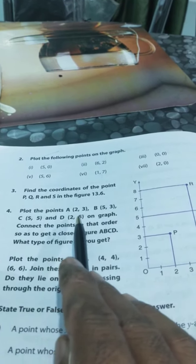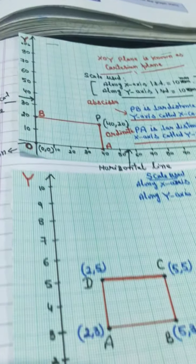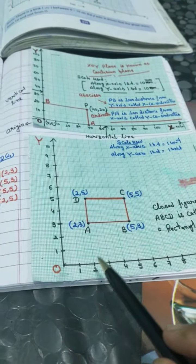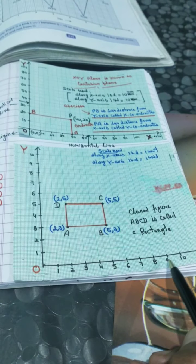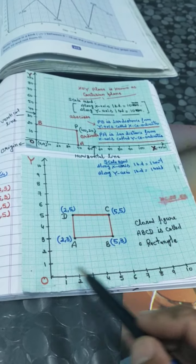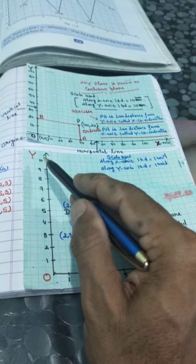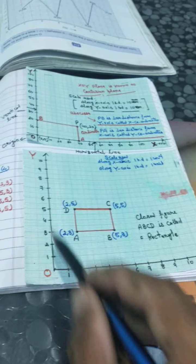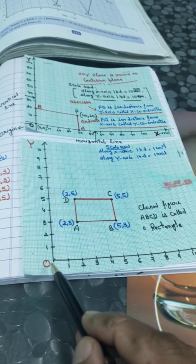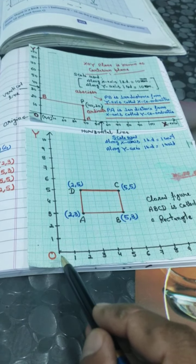I go to question number 4. Plot the points A(2,3), B(5,3), C(5,5), and D(2,5) on a graph. Connect the points in that order to get a closed figure ABCD. What type of figure do you get? To plot the points, first draw two lines — horizontal line OX as the x-axis and vertical line OY as the y-axis. Both meet at point O, the origin, where x and y coordinates are both 0,0. Before plotting, set your scale: along the x-axis and y-axis, one big division equals 1 unit — so mark 1, 2, 3, 4, 5, 6, 7, 8, 9, 10 along the x-axis and similarly along the y-axis.